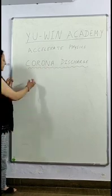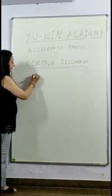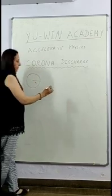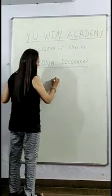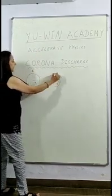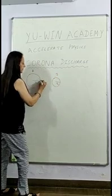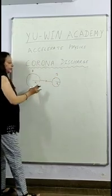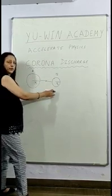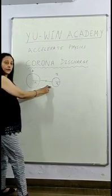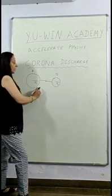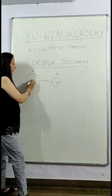To come to that term, we first take two spheres. Let us consider two spheres - one of bigger radius R1 and another of smaller radius R2. Connect them with a conducting wire and give some charge to the system. If I give Q charge to the system, the charge will be distributed on both because they are connected by a conducting wire.